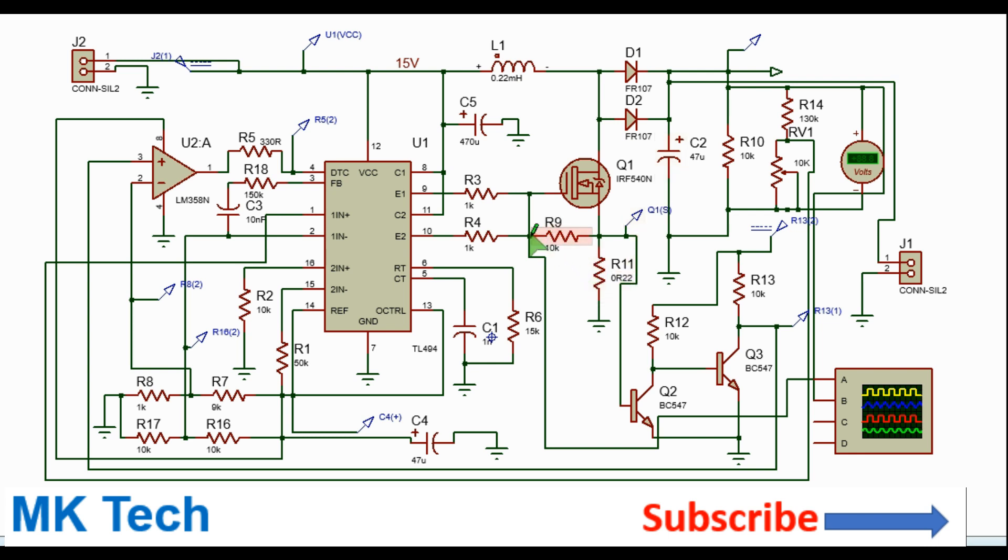So this basically, the gate source resistor discharges the MOSFET to ensure that it's properly not being driven. So here's the output connector and the input connector. So basically, that's all about this DC to DC voltage booster.